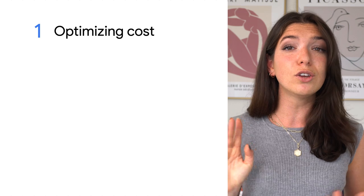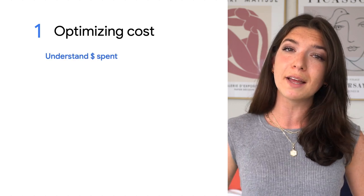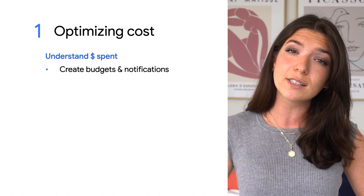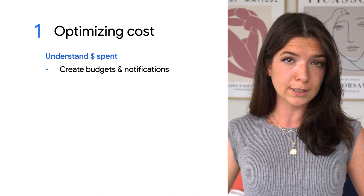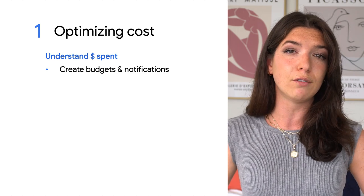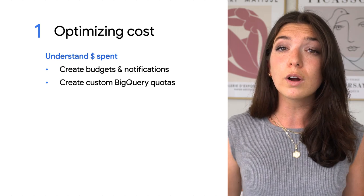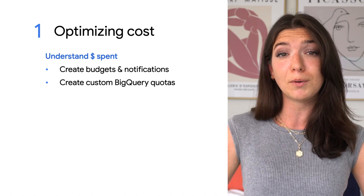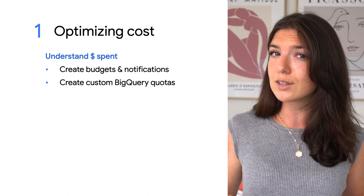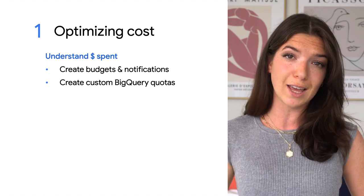Focusing on BigQuery services, there are a few different actions you might want to take using this data. First off, you can see how much money is being spent on BigQuery across different teams or projects, and use this to set up budgets and notifications so that you or others on your team know if spend is getting out of hand. You can even set up custom quotas for BigQuery so that specific users or projects are limited in the amount of data they can process.